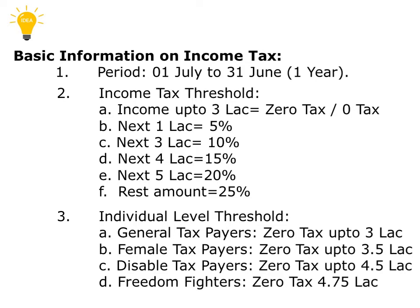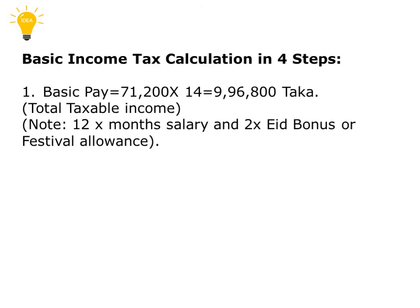This is the basic information somebody needs to know while calculating income tax. I am going to show you how to calculate basic income tax in 4 simple steps. The first step is basic pay. If somebody is earning a salary, we take his or her basic pay and multiply with 14. As an example on the slide, I have considered the salary of a deputy secretary which is 71,200 multiplied by 14 months, giving 9,96,800 Taka. This amount is called total taxable income. Note that 12-month salary plus 2 festival bonus allowances is calculated as 14 months.